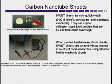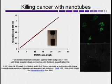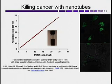Carbon nanotubes also absorb wavelengths of light that are not absorbed by the human body. If carbon nanotubes were modified to attach to cancer cells, you could then shine that wavelength of light on a patient and cook the cancer cells.